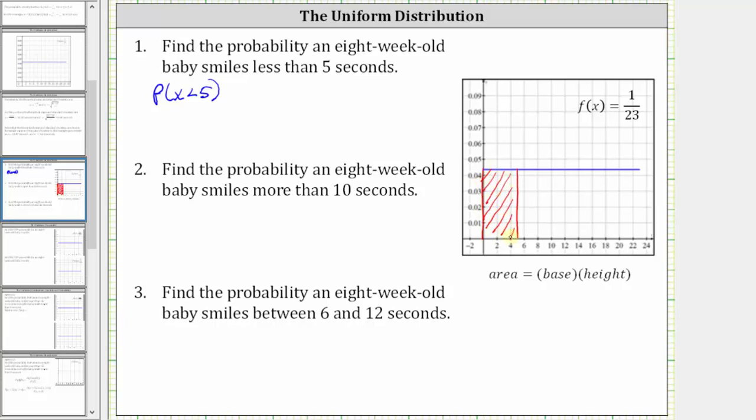So the area that will give us the probability x is less than five is this red area here. Notice how the total area under the uniform distribution from zero to 23 would be one or 100 percent because the base is 23 and the height is 1/23rd. So to find probabilities of a uniform distribution, we use the area formula for rectangle, which is the base times the height.